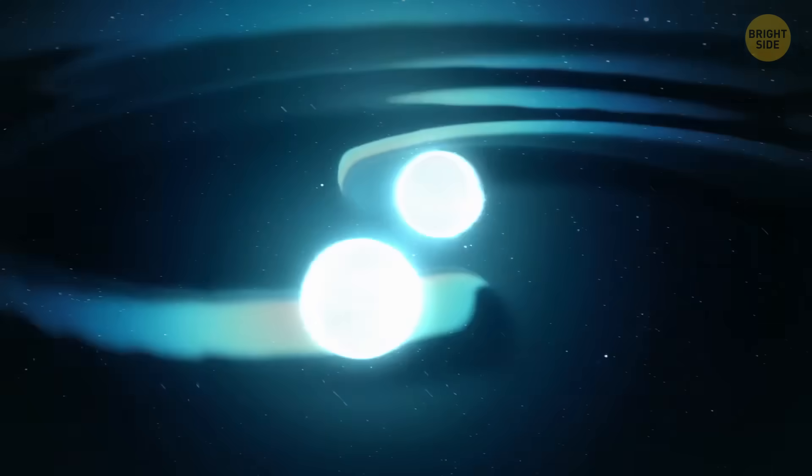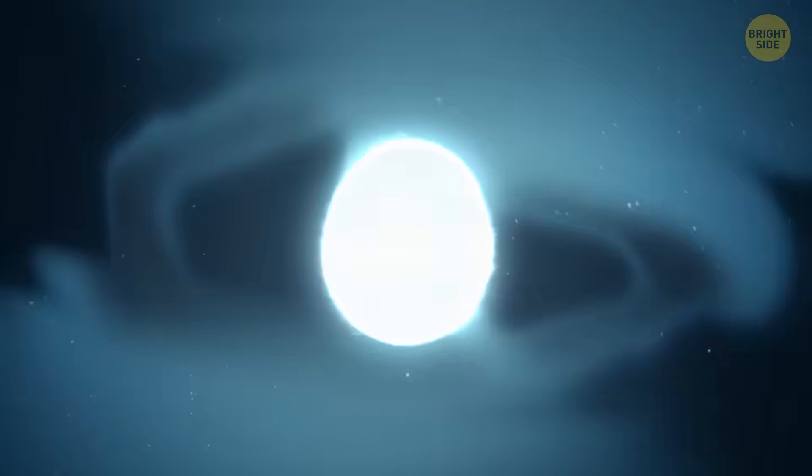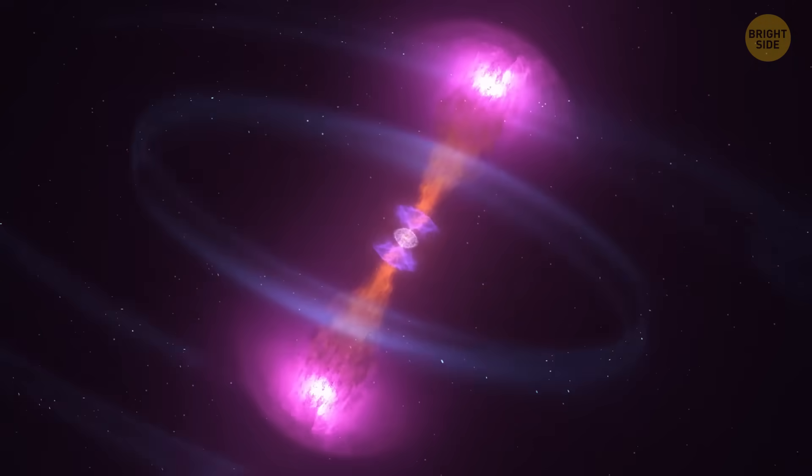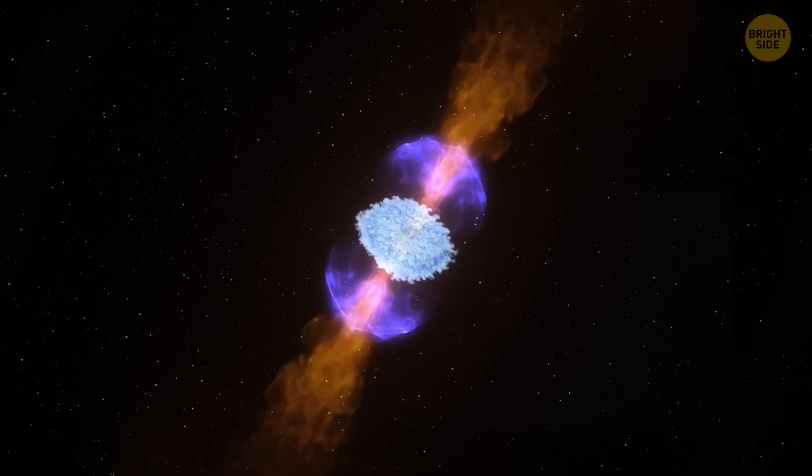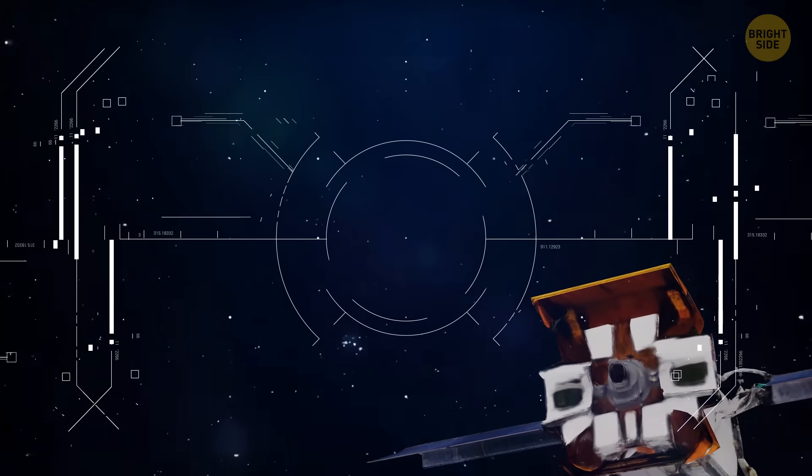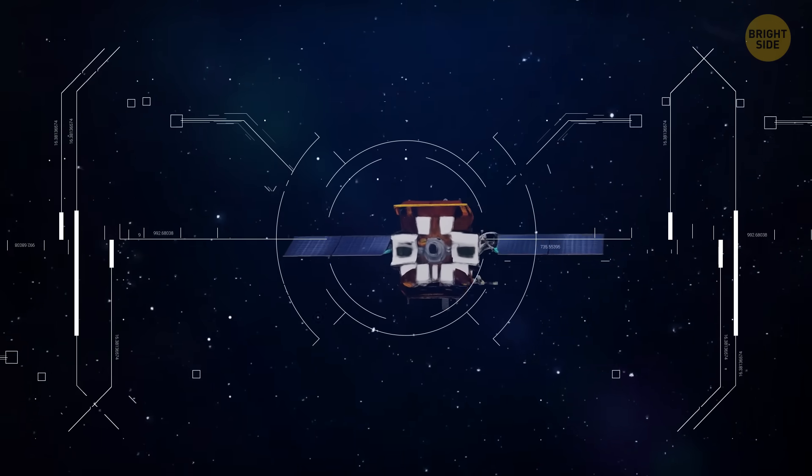The Einstein probe also hopes to catch the electromagnetic signals from events that cause gravitational waves, like when neutron stars merge. It also keeps an eye on the whole sky to spot all kinds of space explosions and track already known changing X-ray sources.